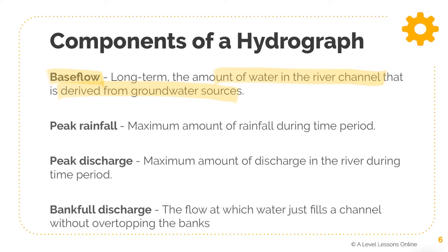Peak rainfall is the maximum rainfall during that period of time. Peak discharge is the maximum amount of discharge in the river during that time. Finally, bank full discharge is the flow at which water just fills the channel without overtopping the bank — it is on the brink of flooding but not quite there. That is the maximum a river can hold, and it is known as bank full discharge.